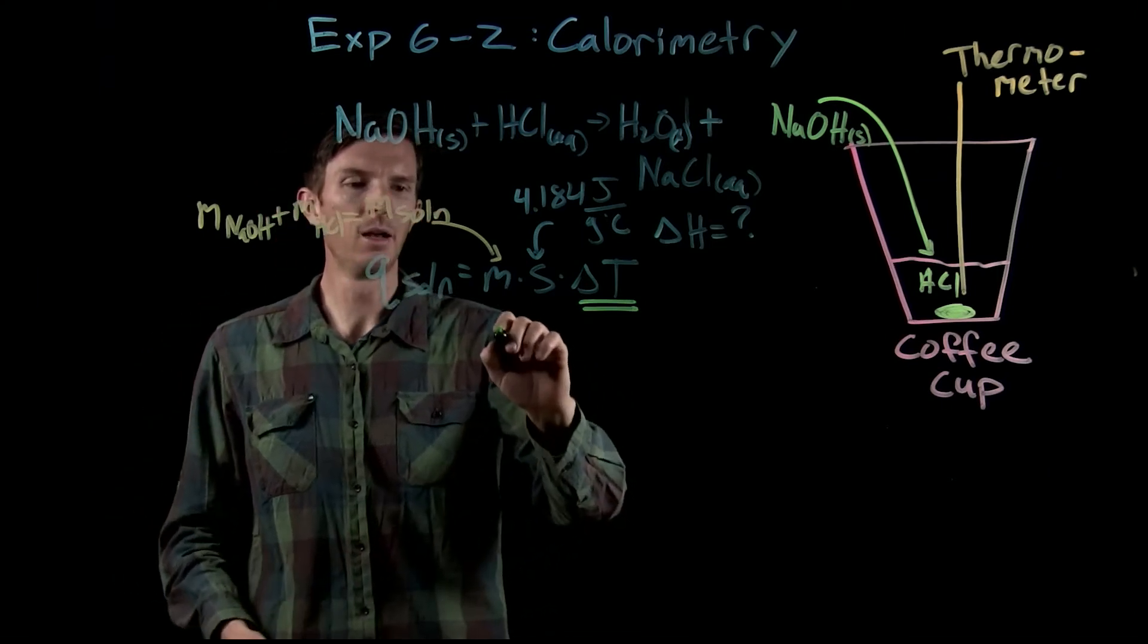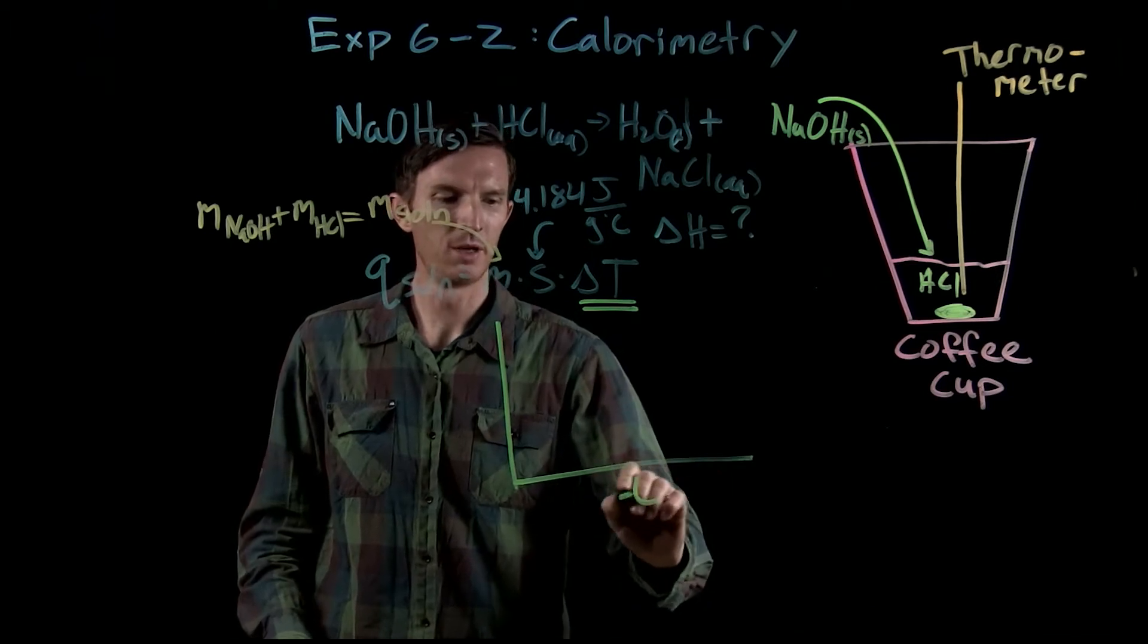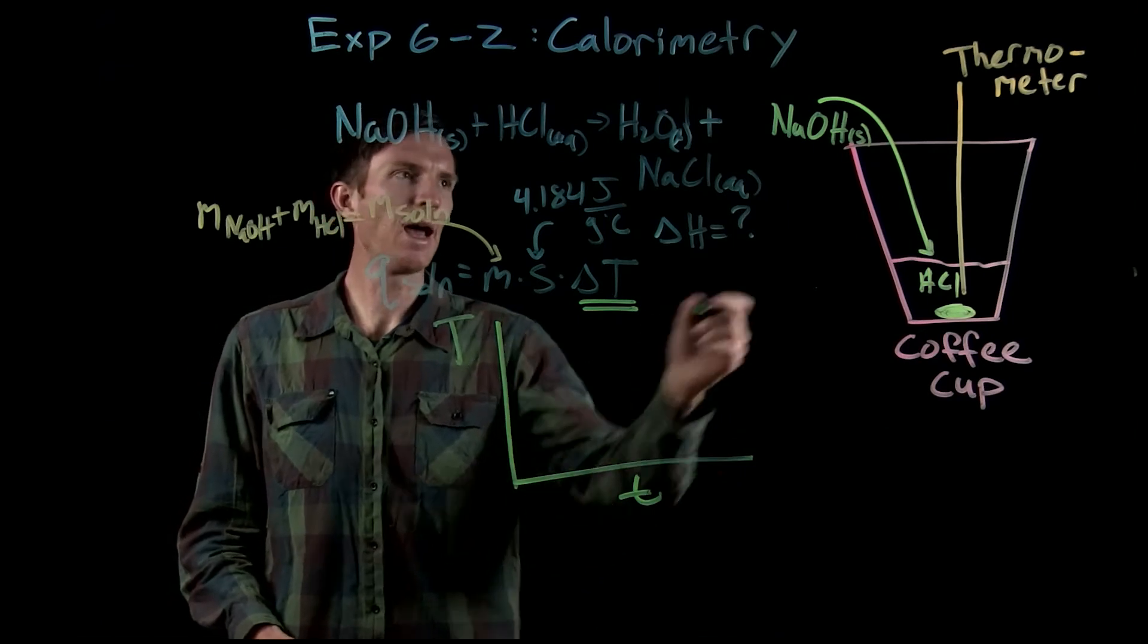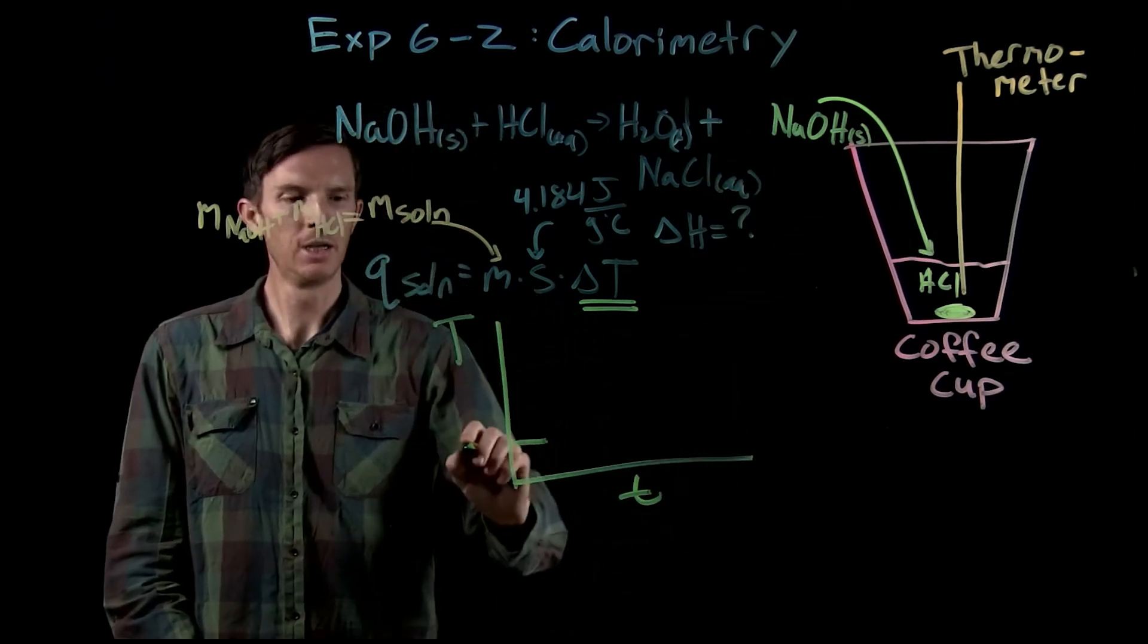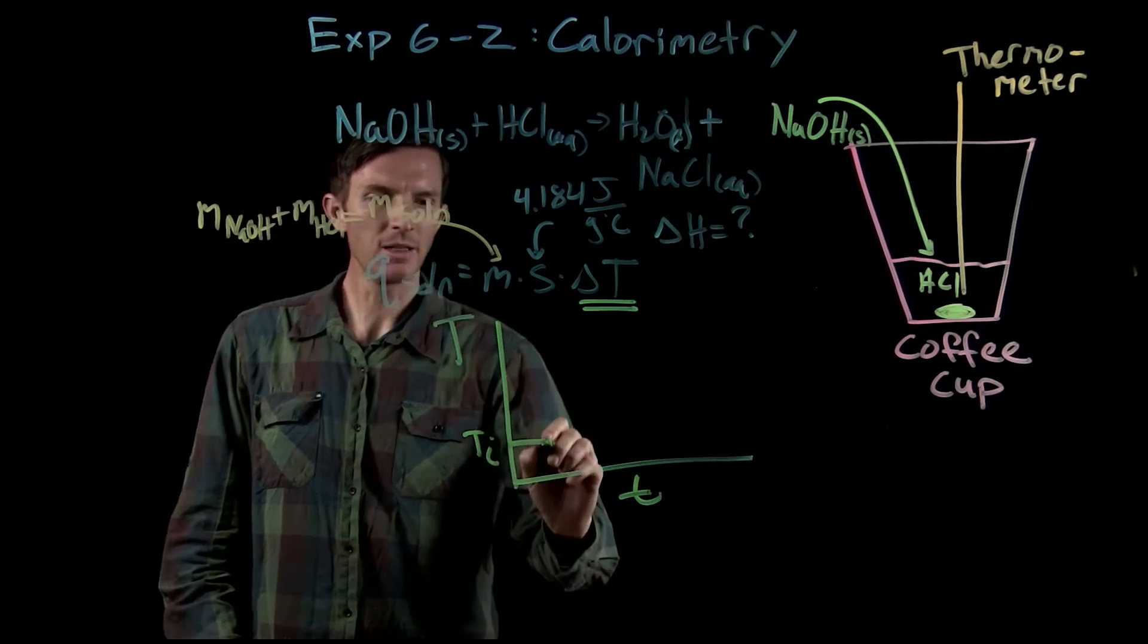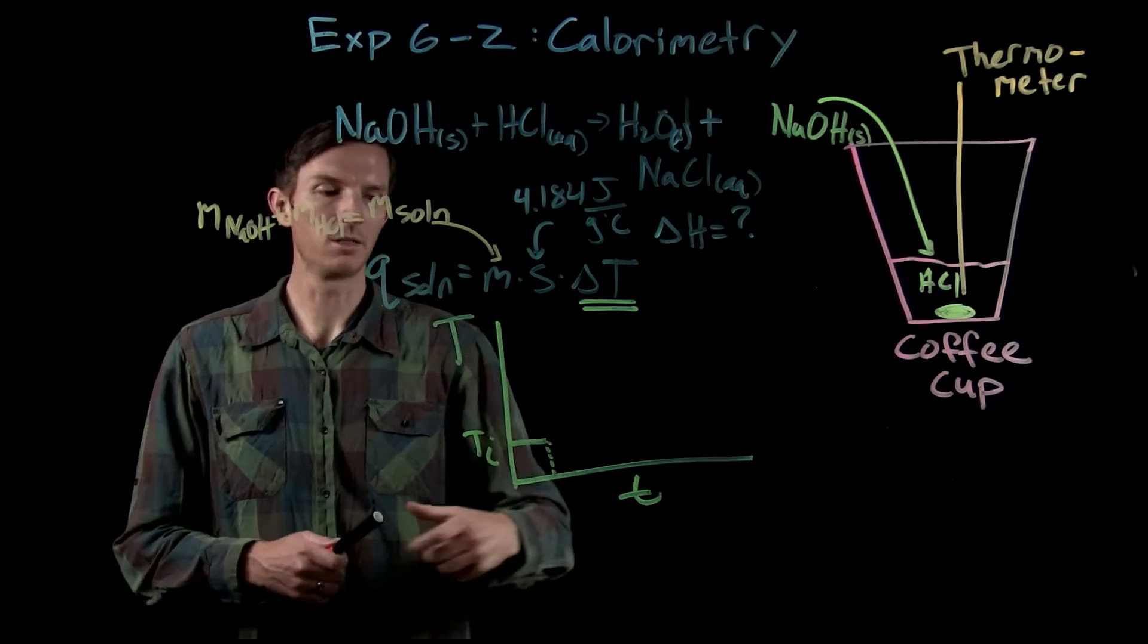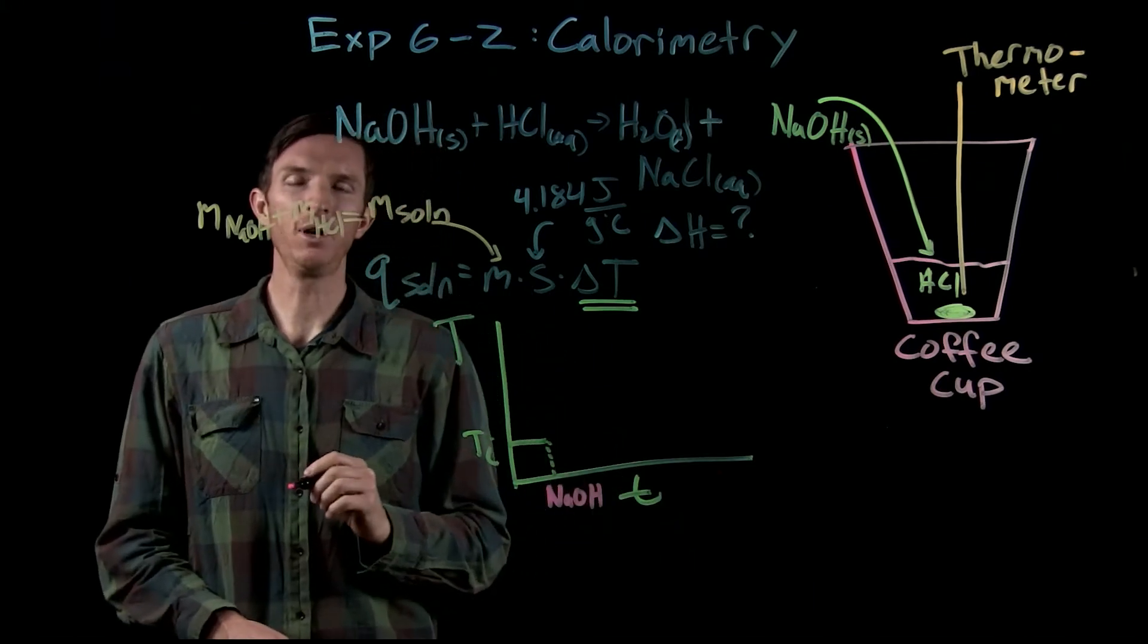Okay, and we're going to look at our change in temperature over time. So we'll have our time here, we'll have our temperature, and before we add in our sodium hydroxide, we'll get a baseline. So we'll have our initial temperature that we had measured. Now at some initial point, what we'll do is we'll add in our reagent. So let's go ahead and say we add in our sodium hydroxide at this point.